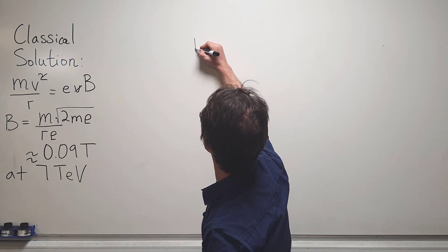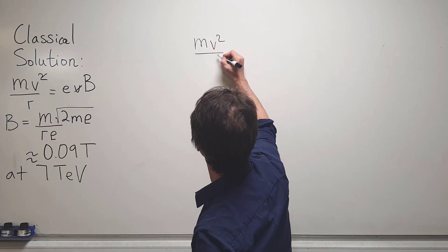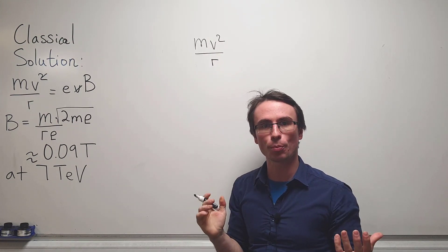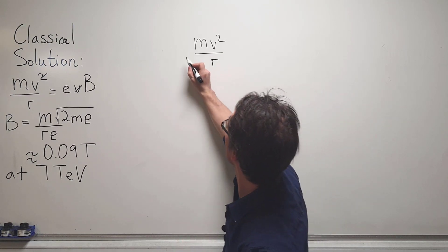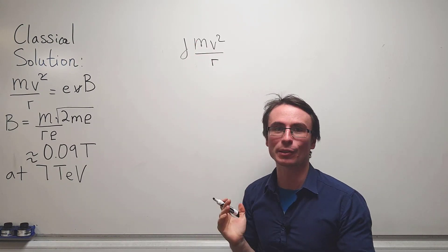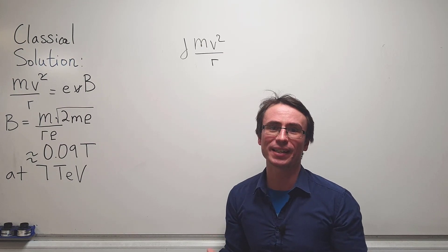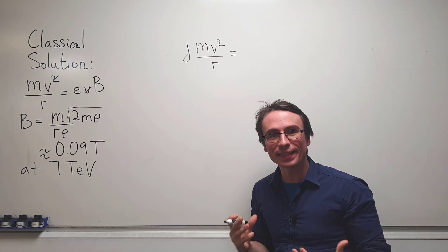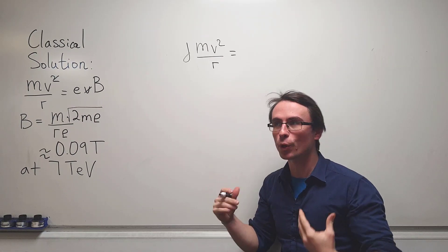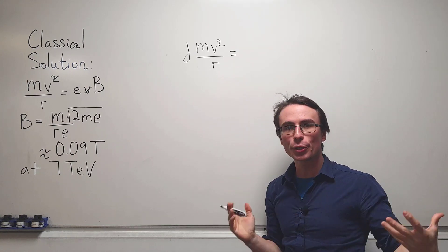We're no longer just going to write mv squared over r for the centripetal force, but we're going to write gamma mv squared over r, where gamma is a relativistic factor. We're going to set this equal to the force that is acting on protons, which is qvb.